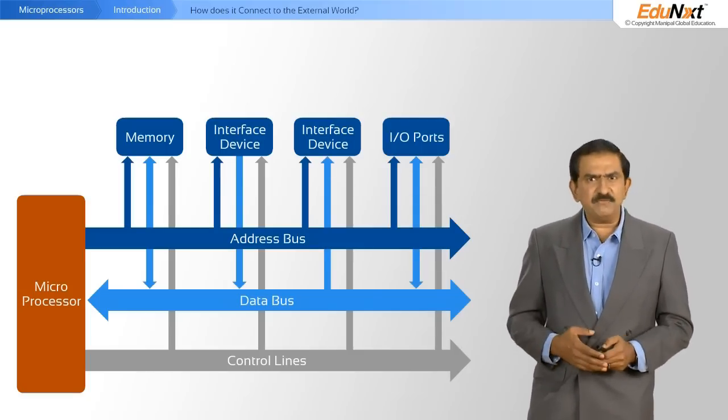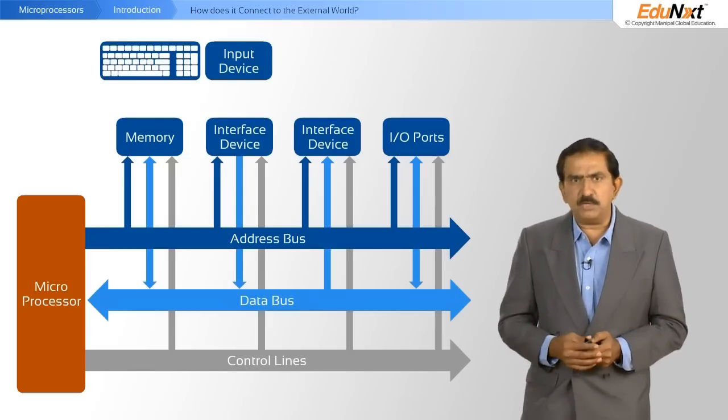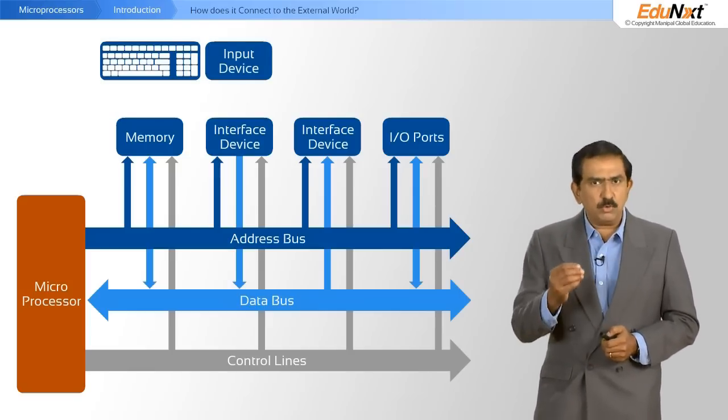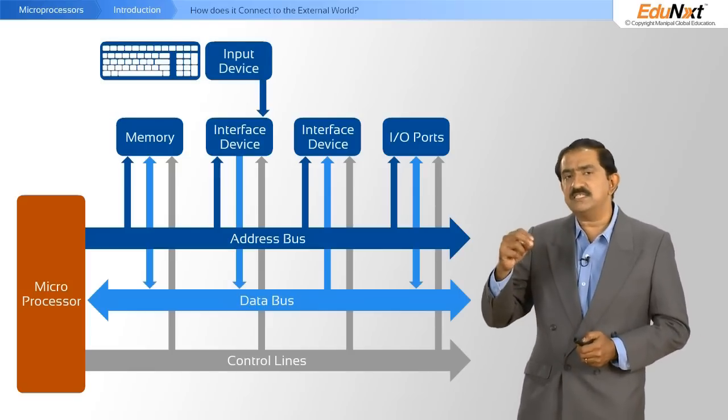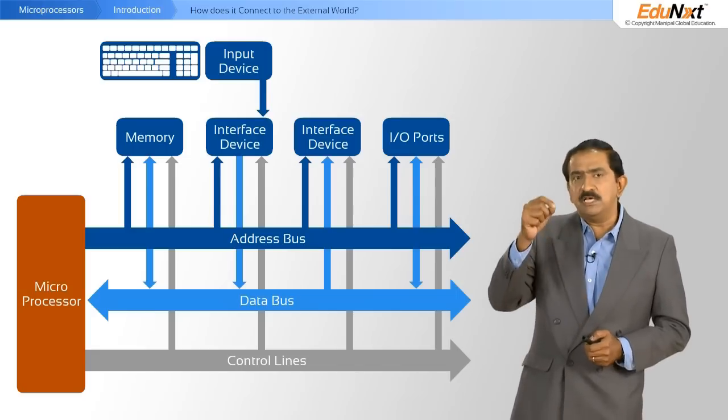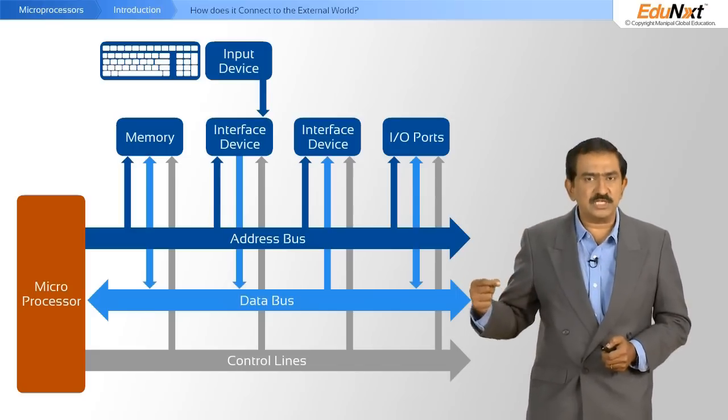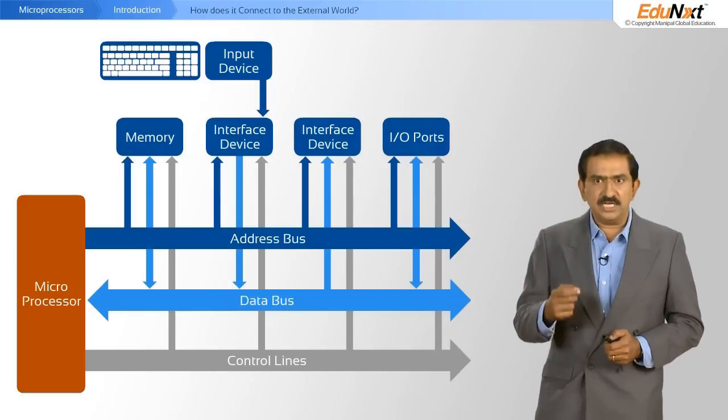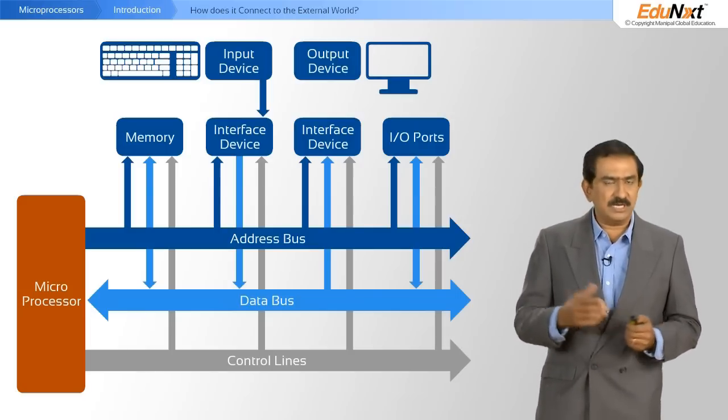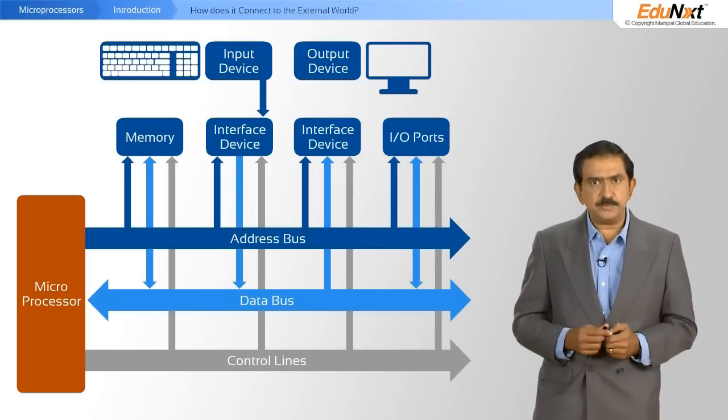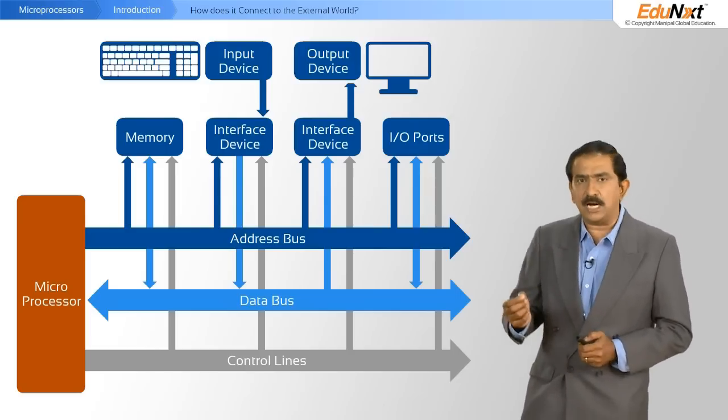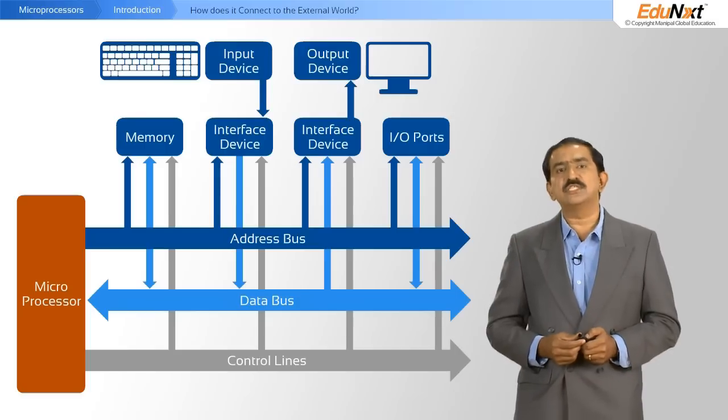If you take an interface device, let's take an input device, like a keyboard. So a keyboard that's connected to an interface device, you would see from this diagram that the data bus flows into the processor. On the other hand, if you had an output device like a monitor, or an LCD display, LED display, you would have the data bus come out of the processor into this output device.